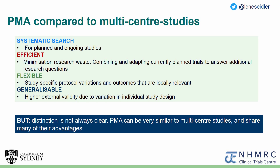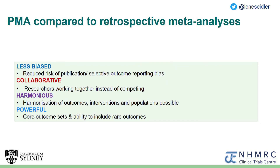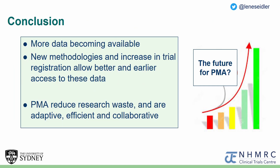Having said all this, the distinction between a PMA and a multicenter study is not always clear — they can in fact be very similar and share many advantages. Compared to a retrospective meta-analysis, PMAs are less biased, more collaborative, and allow increased harmonization of outcomes, which can increase power. To conclude, we live in a time where more data are becoming available exponentially, and new methodologies and trial registration allow better and earlier access to these data. We believe that prospective meta-analysis offers an adaptive, efficient, and collaborative way to combine these data in a less biased way. I hope that the guidance we developed will enable more researchers to successfully use these methodologies, so that in future scoping reviews our graph summarizing the number of PMAs over time will look something like this.